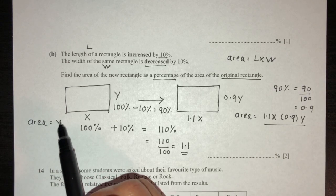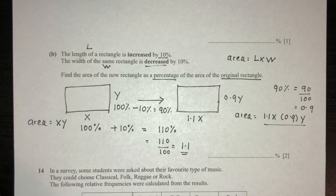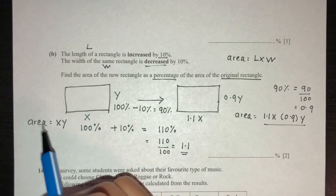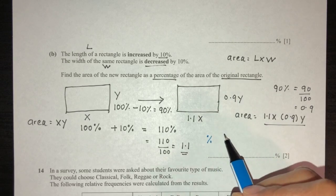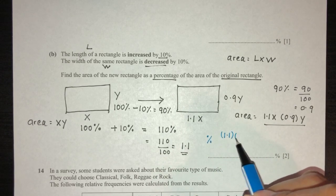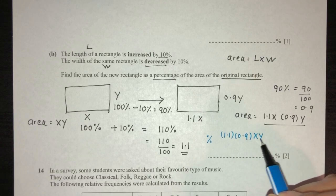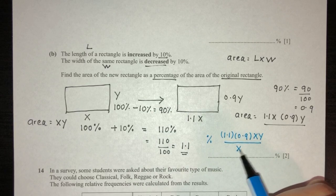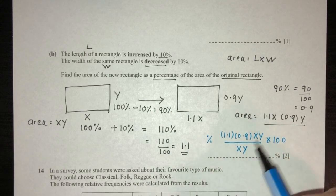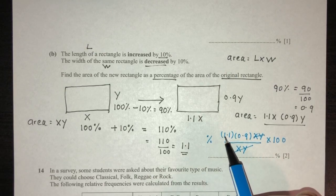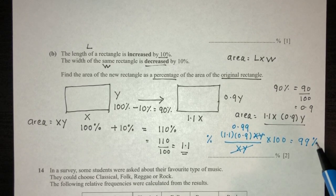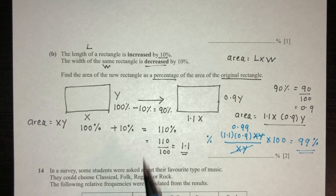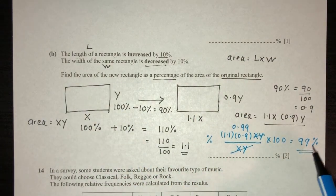To find the percentage, we take the new value over the initial value times 100. So the percentage equals 1.1 times 0.9 times xy, divided by xy, times 100. The xy terms cancel, giving 0.99 times 100, which equals 99 percent.